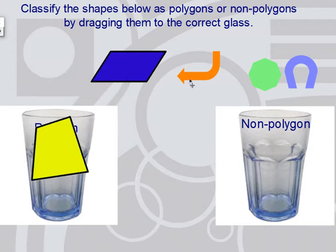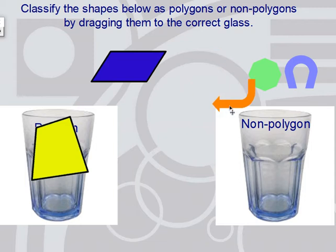Let's look at this shape. I see at least three sides. I see that it's closed — there are no openings. But it's got curves, and the lines have to be straight. So this is not a polygon.